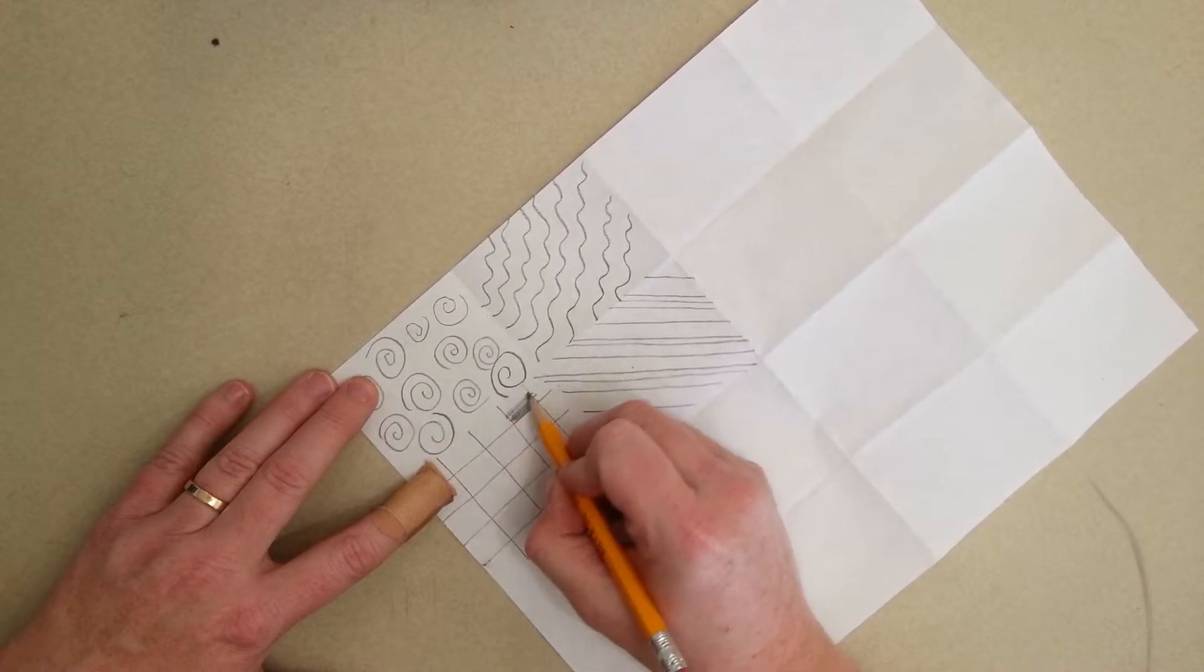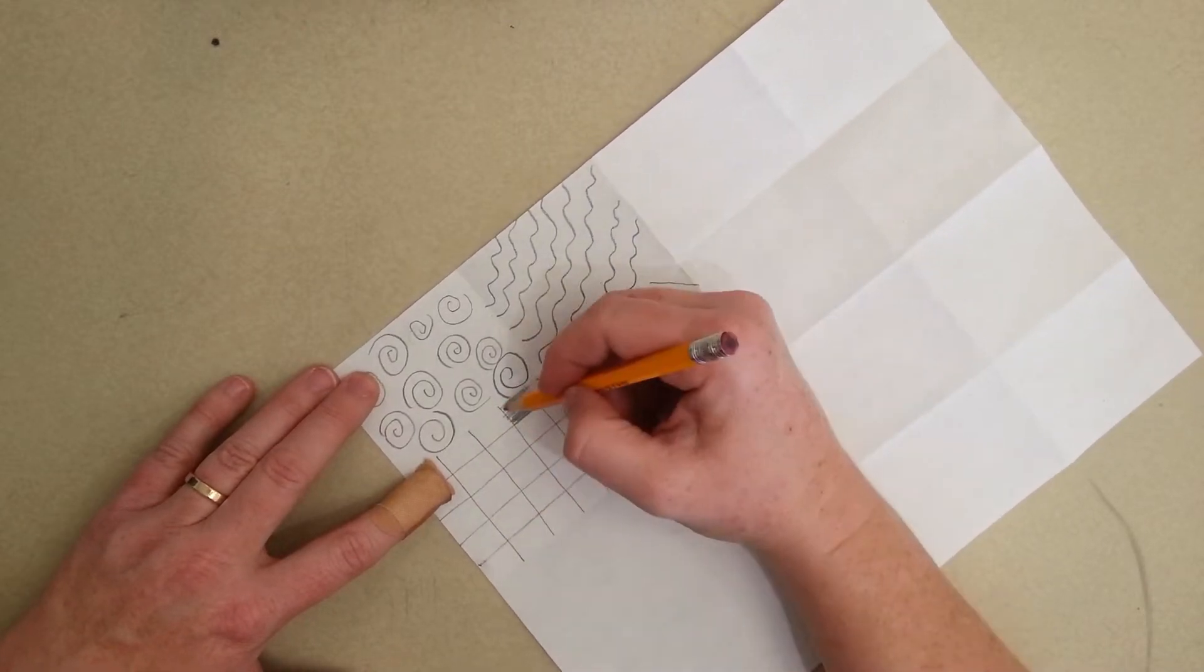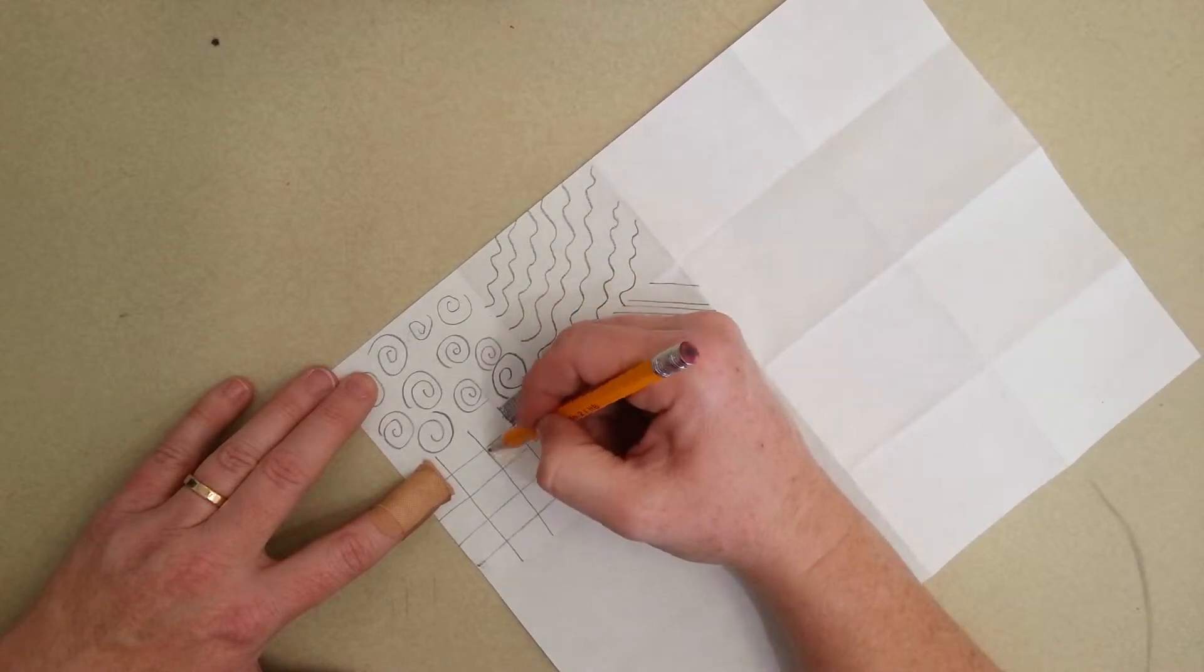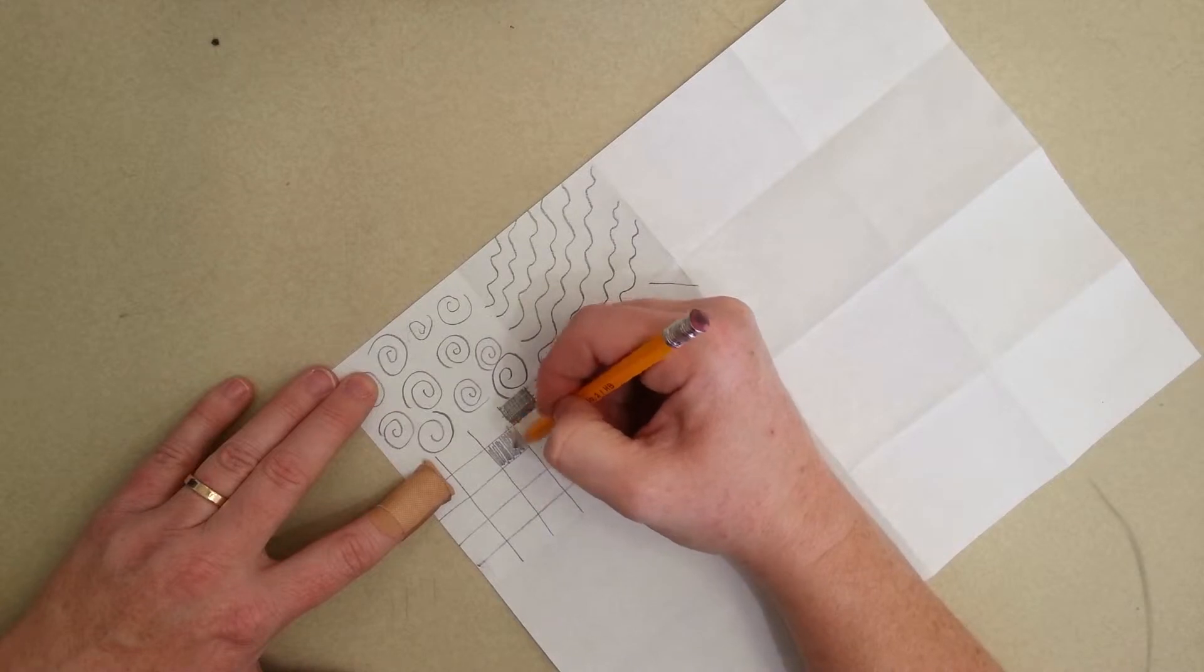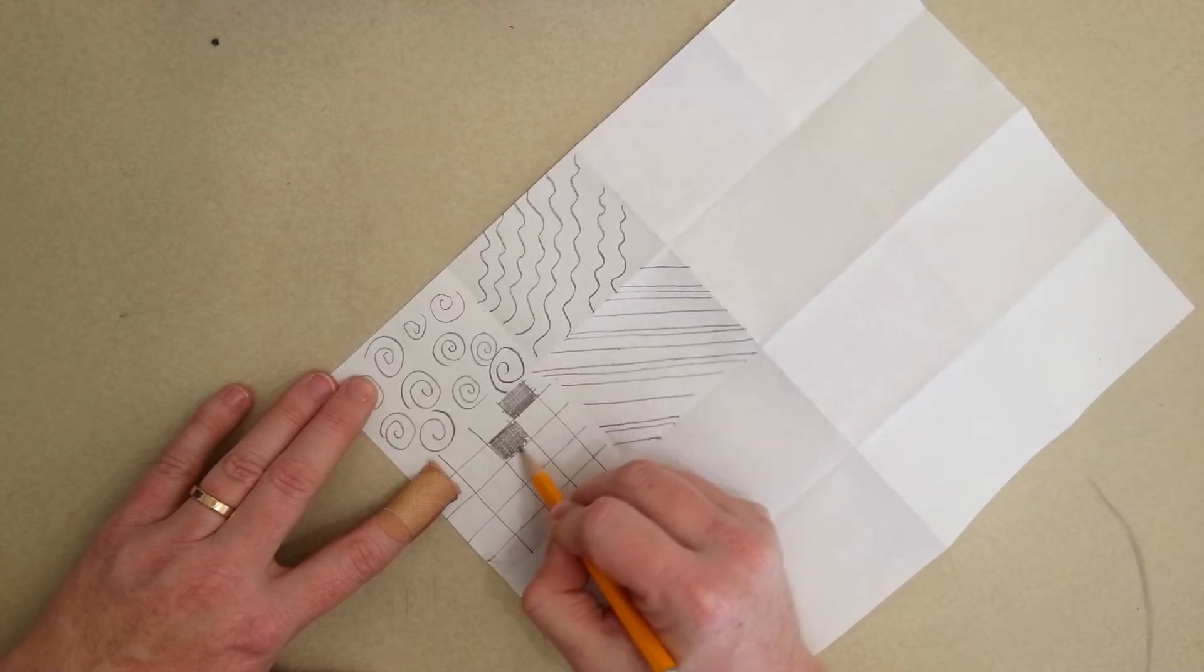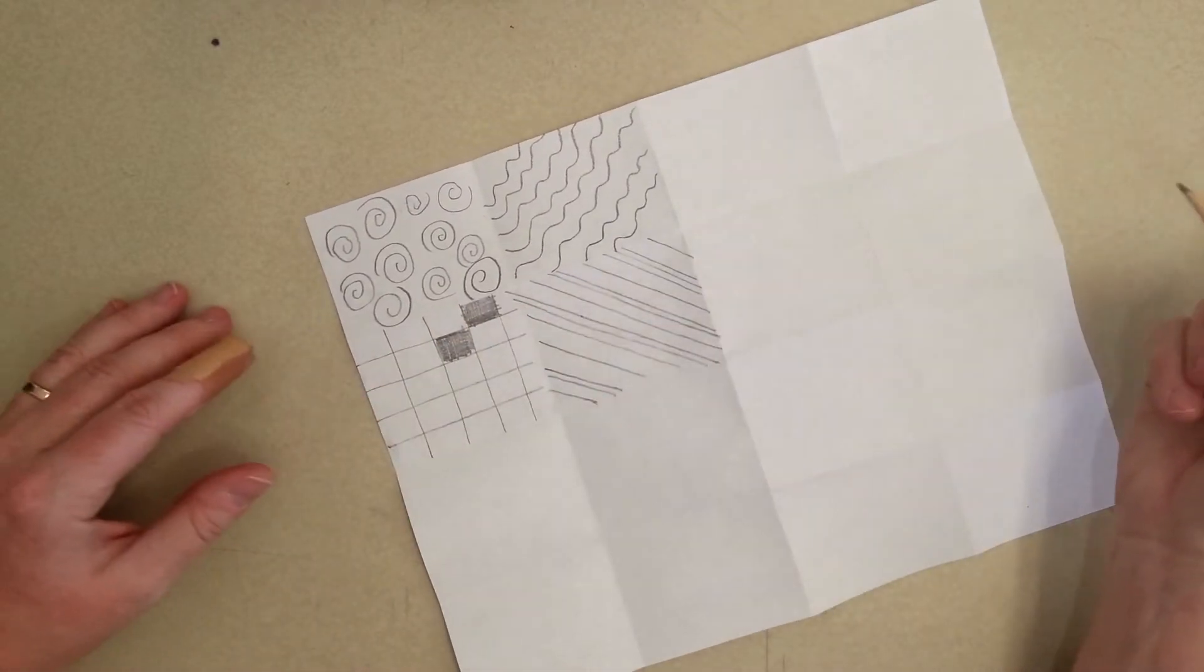This one, I'm going to do a checkerboard. So I could go in there. Or you could just leave it plain as a grid.